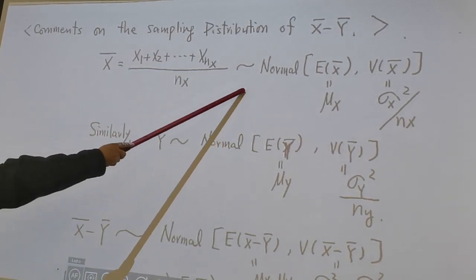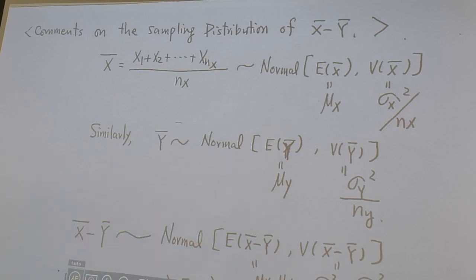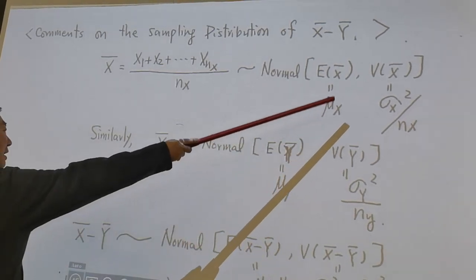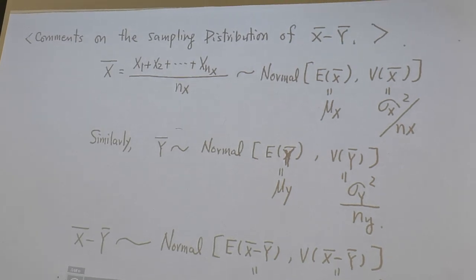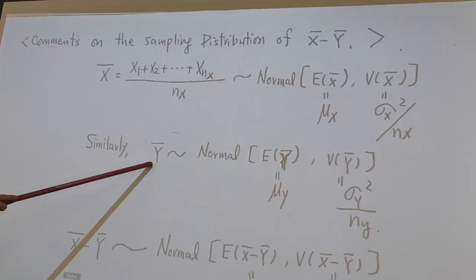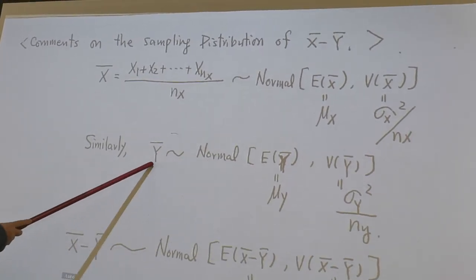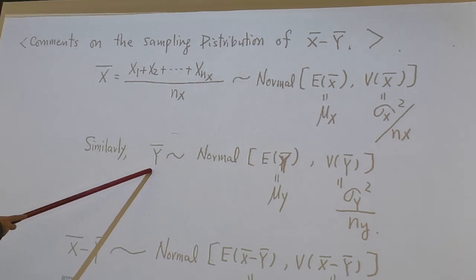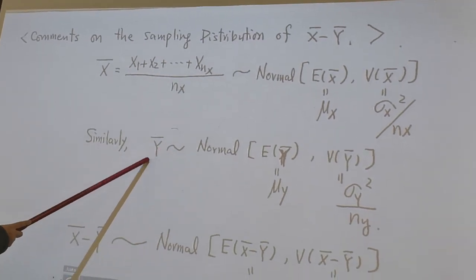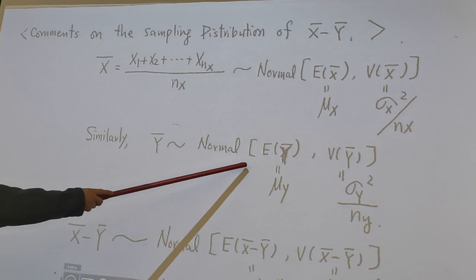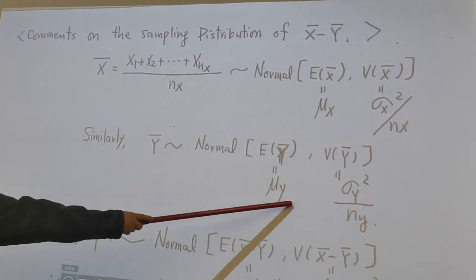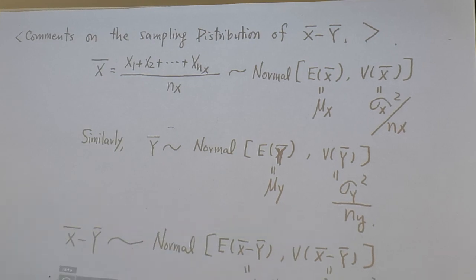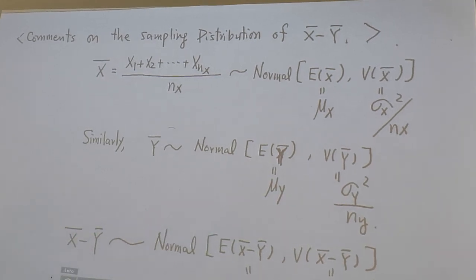X-bar follows normal with mean of x-bar is mu x and variance of x-bar is sigma squared over nx. Similarly, y-bar follows normal because normality is closed under linear combination. So y-bar also follows normal with mean y-bar is mu y and variance y-bar equal to sigma y squared over ny.